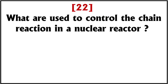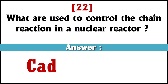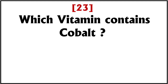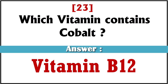What are used to control the chain reaction in a nuclear reactor? Answer: cadmium rods. Which vitamin contains cobalt? Answer: vitamin B12.